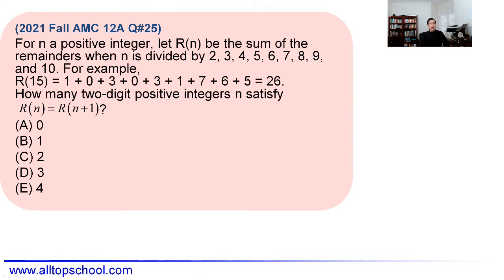We want to find how many two-digit positive integers n satisfy the condition that when n increases by one, the sum of the remainders remains the same. The individual remainders for each divisor may change, but the total sum must remain equal.